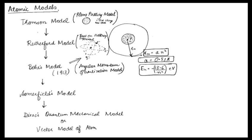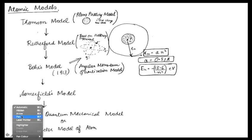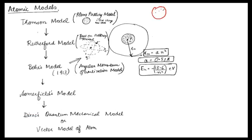The discussion of atomic models began around the year 1900, following the discovery of the electron by J.J. Thomson and the discovery of radioactivity in 1897. Thomson proposed what is also known as the plum pudding model. He stated that the negative charge particles (electrons) and positive charge particles are present randomly within the atom.